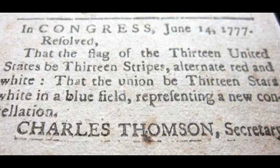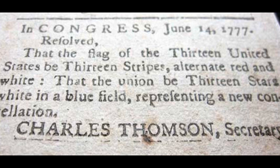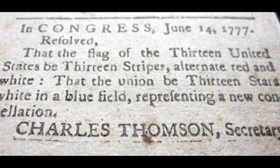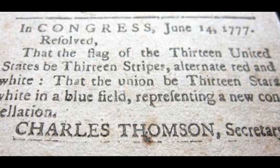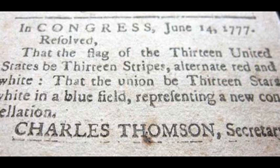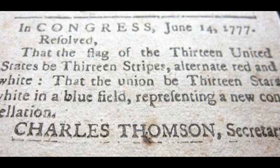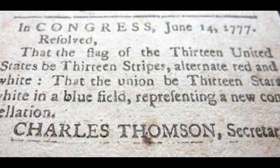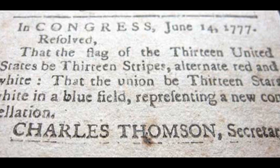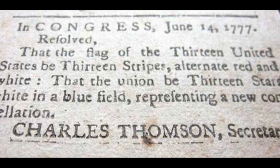Consequently, the 50 stars on the current flag first appeared after Hawaii joined the United States in 1959. The flag, about which the national anthem, the Star Spangled Banner, was written, is not the same design as the one in use today. That was instead a 15-star, 15-stripe flag flown at Fort McHenry in Baltimore Harbour during a bombardment by the British Royal Navy ships during the War of 1812.